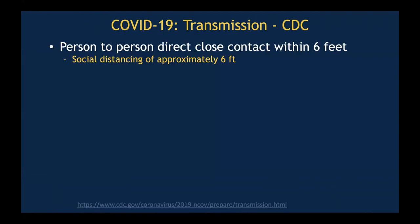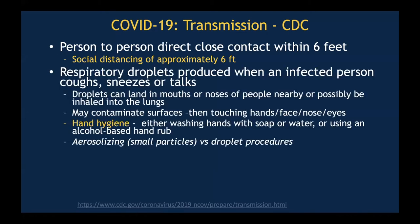Person-to-person direct close contact within six feet is the primary mechanism of transmission — and that's why social distancing of approximately six feet is recommended. Respiratory droplets are produced when an infected person coughs, sneezes, or talks, and those droplets can land in the mouths or noses of people nearby and possibly be inhaled into the lungs. In addition, COVID-19 may contaminate surfaces, particularly harder surfaces. When you touch those surfaces and then touch your face, nose, and eyes, you can be infected. That's why hand hygiene is so important — washing hands with soap and water or using an alcohol-based hand rub. For any concern about aerosolizing procedures versus larger droplet procedures, visit the CDC website.